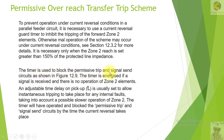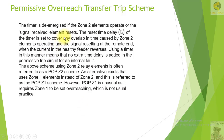The timer is used to block the permissive trip signal send circuits as shown in the figure. The timer is energized if a signal is received and there is no operation of the zone 2 element. An adjustable time delay on pickup is usually set to allow instantaneous tripping for any internal faults, taking into account a possible slower operation of zone 2. The timer will have operated and blocked the permissive trip and signal send circuits by the time the current reversal takes place, ensuring no extra time delay is added in the permissive trip circuit for an internal fault.